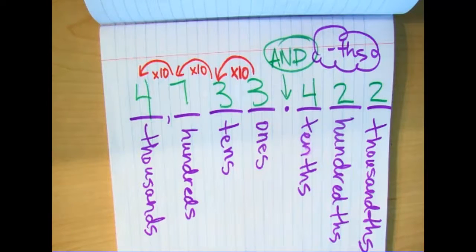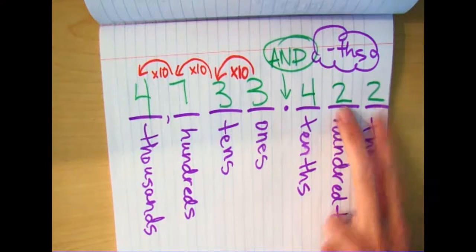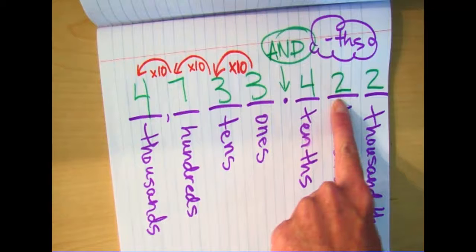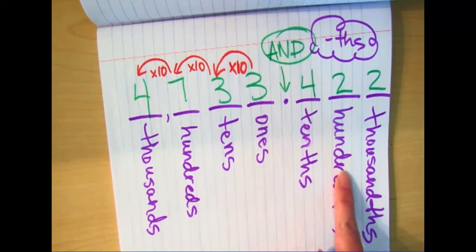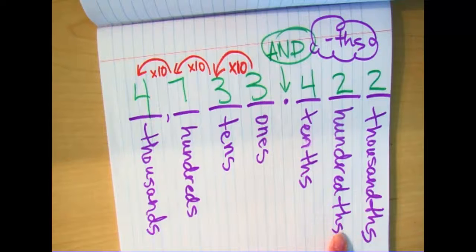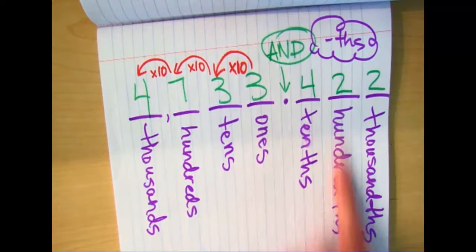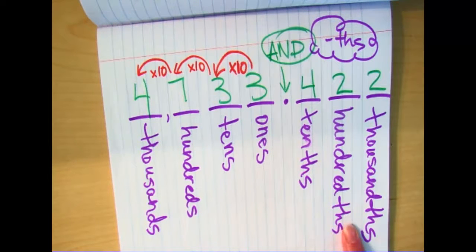You have to know that as you go to the left, every time you jump one spot it's ten times bigger. What about these twos on the right side? What's the value of this two I'm pointing to? Two hundredths. Is it the same as this one? No — this is two thousandths. When you see two hundredths, what do you think of in everyday life?